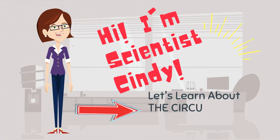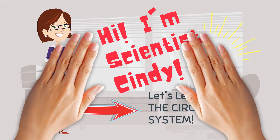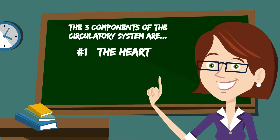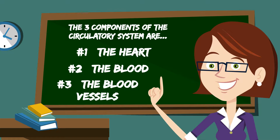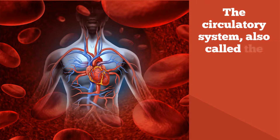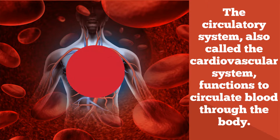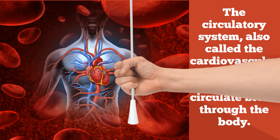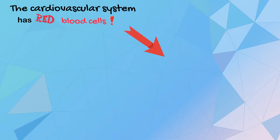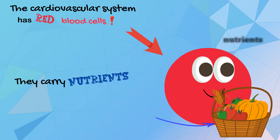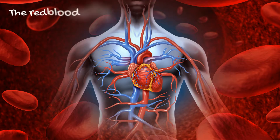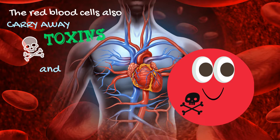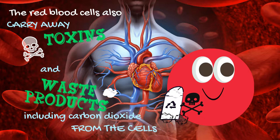Hi, I'm scientist Cindy. Let's learn about the circulatory system. The three components of the circulatory system are the heart, the blood, and the blood vessels. The circulatory system, also called the cardiovascular system, functions to circulate blood through the body. The cardiovascular system has red blood cells — they carry nutrients and oxygen to the cells, and also carry away toxins and waste products including carbon dioxide from cells.